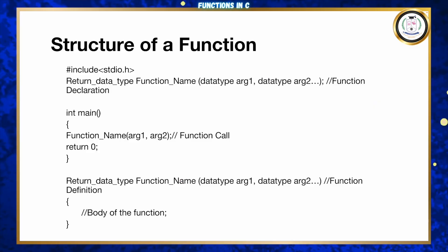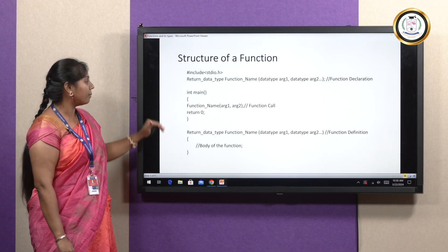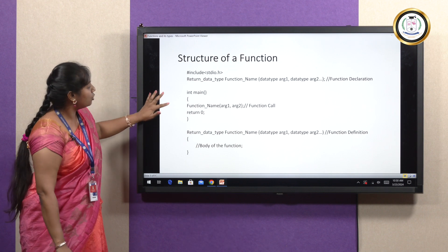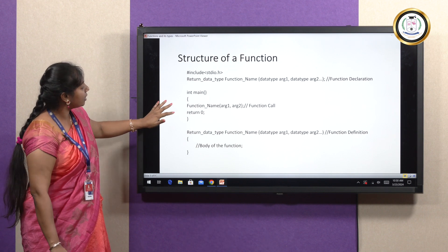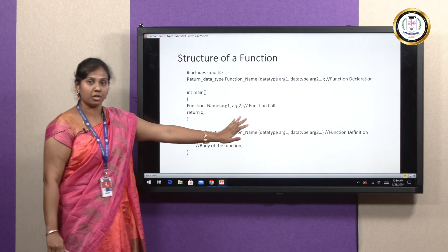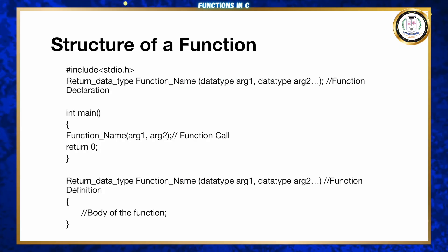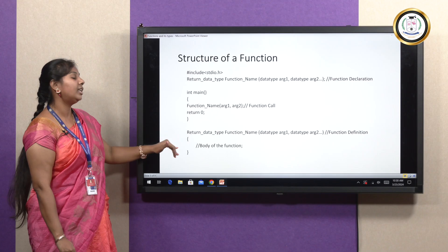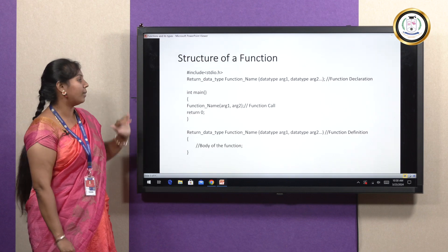If you want to use a function, you need to call it from within your main function. The line representing the function name in the main function is called the function call. When the main function is executing, it will call the user-defined function, and after it executes, the control will be returned back to the main function.